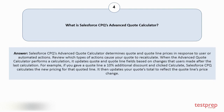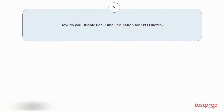For example, if you gave a quote line a 10% additional discount and clicked Calculate, Salesforce CPQ calculates the new pricing for that quote line. It then updates your quote's total to reflect the quote line's price change. Question number five: How do you disable real-time calculation for CPQ?